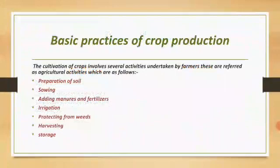Next we have basic practices of crop production. As we have to produce the crops, there are some basic practices which we have to use for the production. The cultivation of crops involves several activities undertaken by the farmers, referred to as agricultural activities. They are as follows: preparation of soil, sowing, adding manures and fertilizers, irrigation, protecting from weeds, harvesting, and storage.